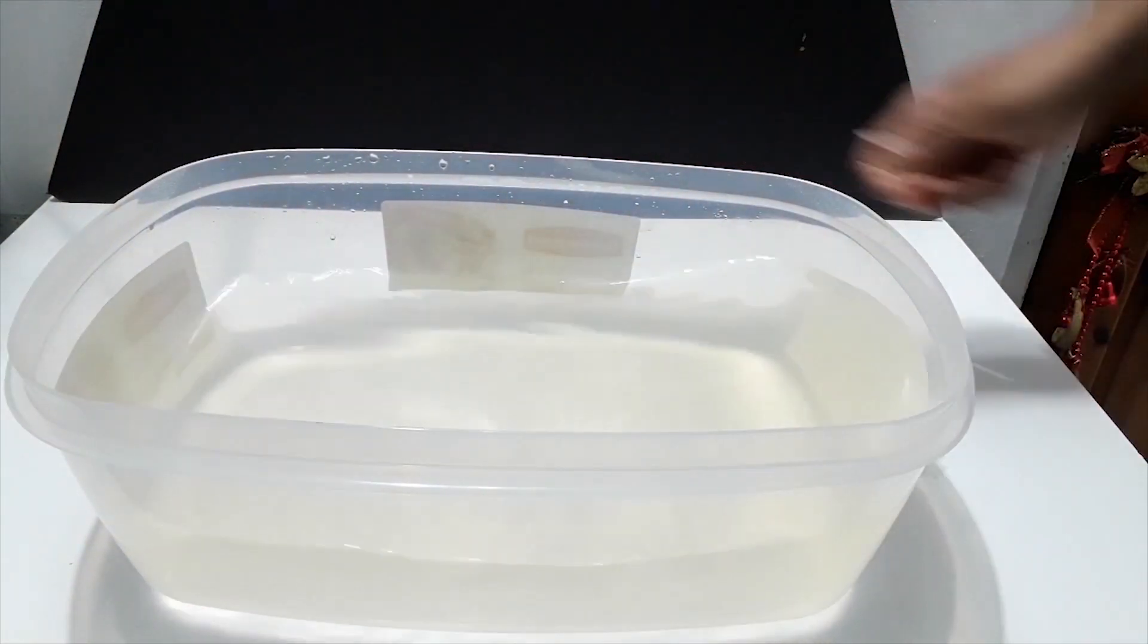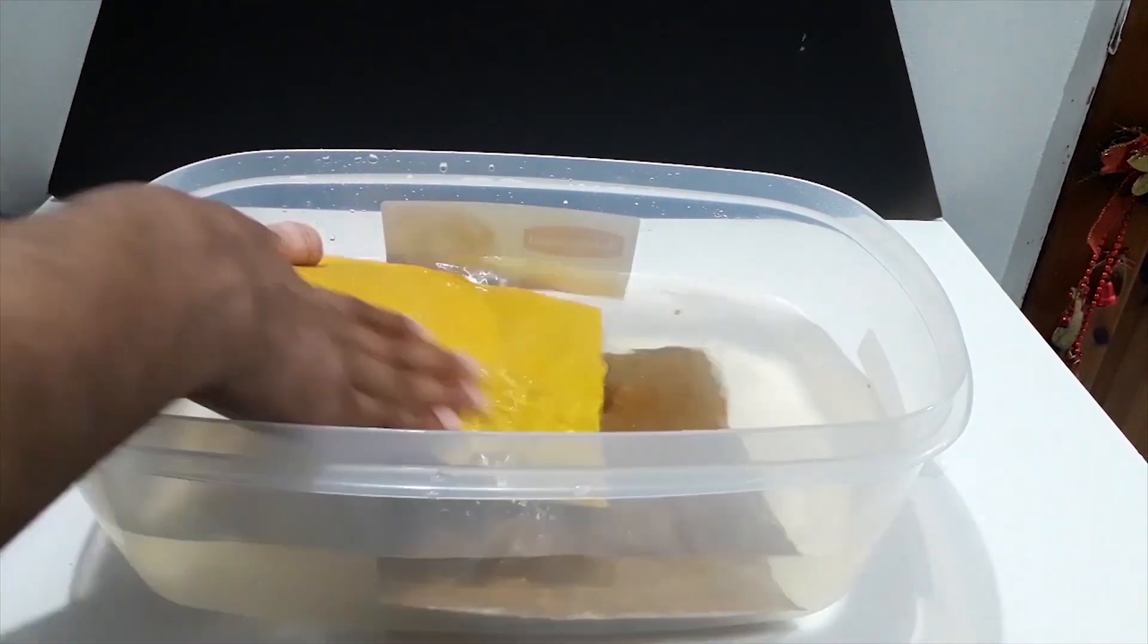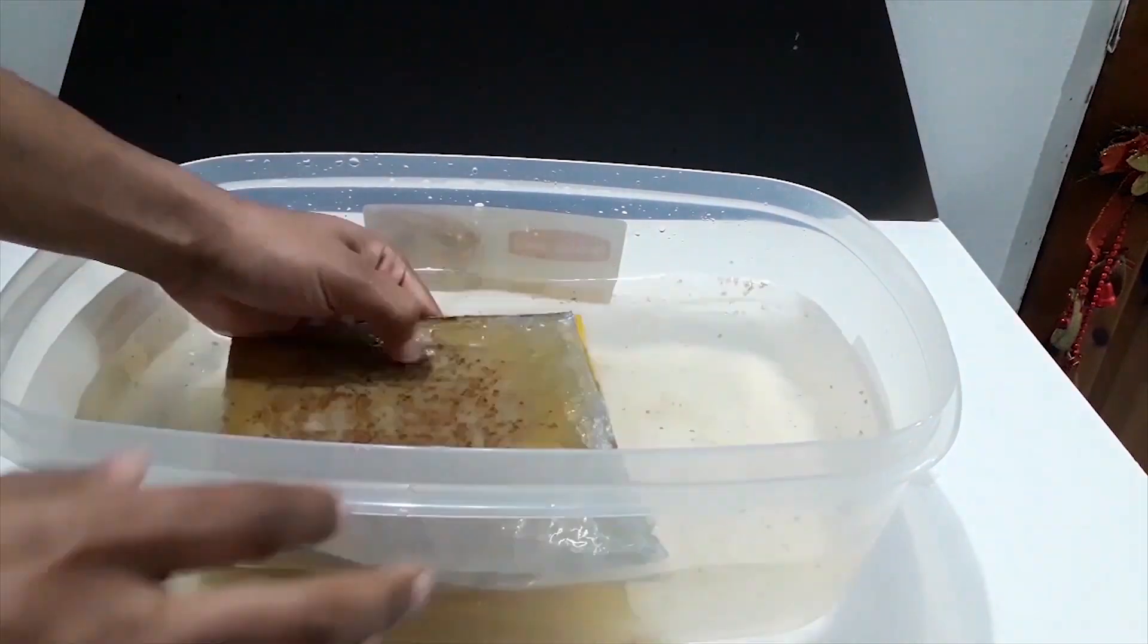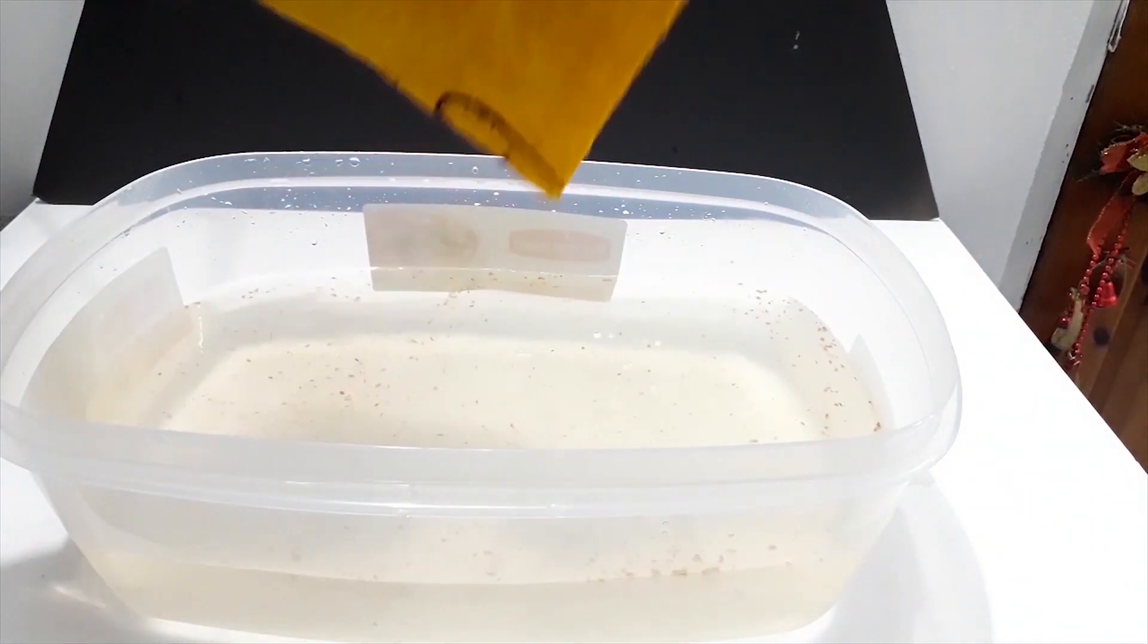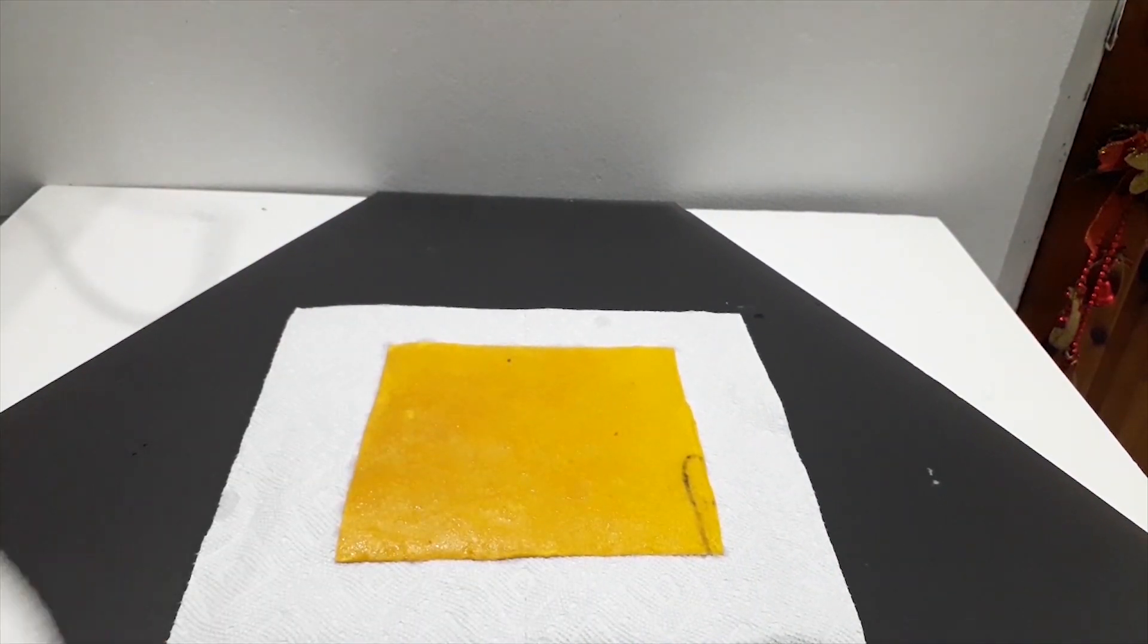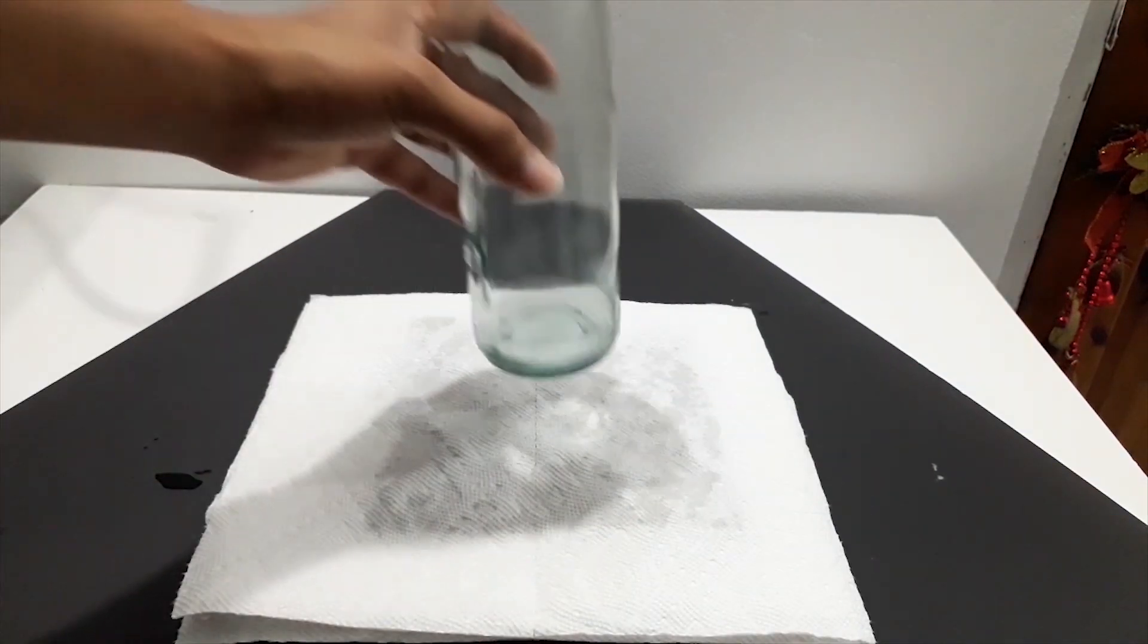The membranes then need to be washed to remove any excess unreacted glue and citric acid present for about 5 minutes. After washing the membranes, to speed up the drying process, the membranes are then placed between two pieces of paper towel and a weight on top of it. Here, I'm using a glass bottle.